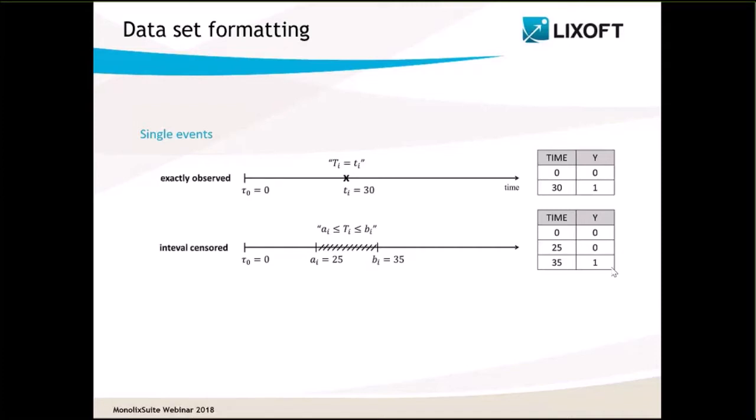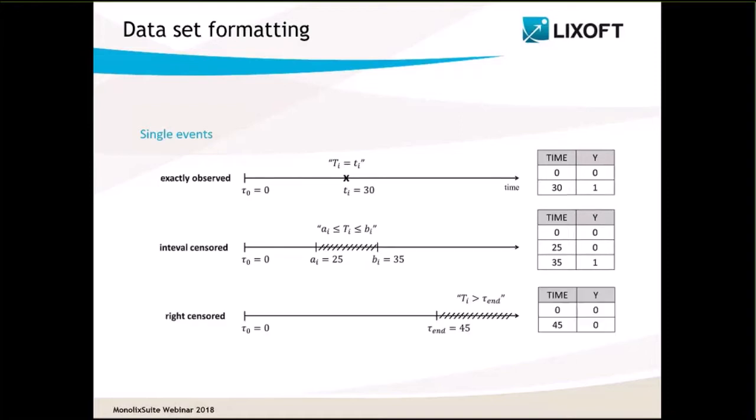Depending on the model chosen, events will all be treated either as exactly observed or as interval-censored. In the third example, no event occurred during the observation period for this individual, but it may still occur after the end of the observation period at time 45. This right-censoring information is included in the dataset with a zero in the observation column, and contrary to interval-censored events, this can be combined with exactly observed events.